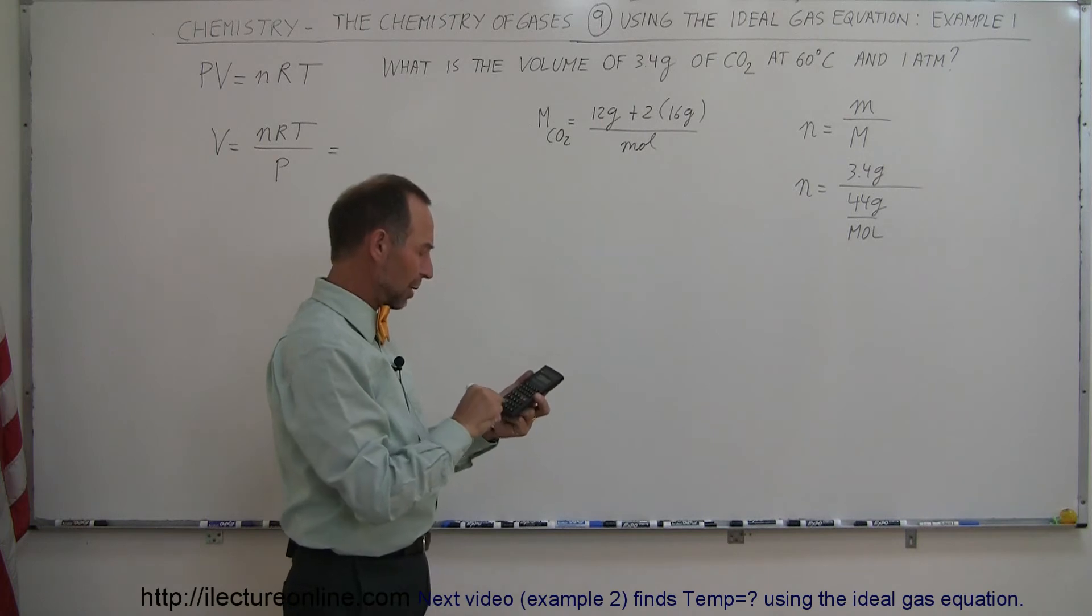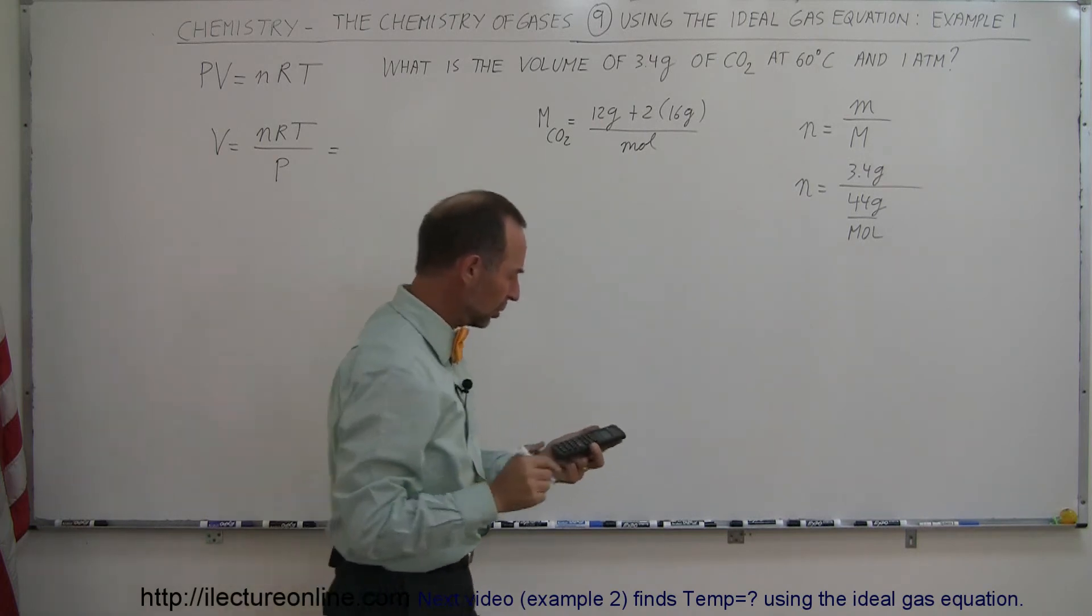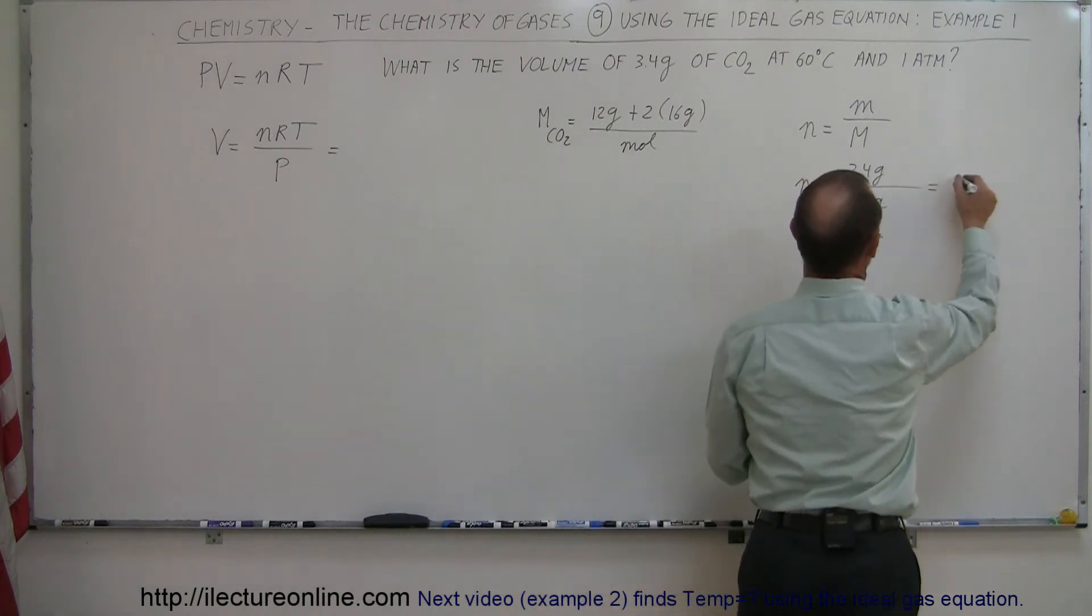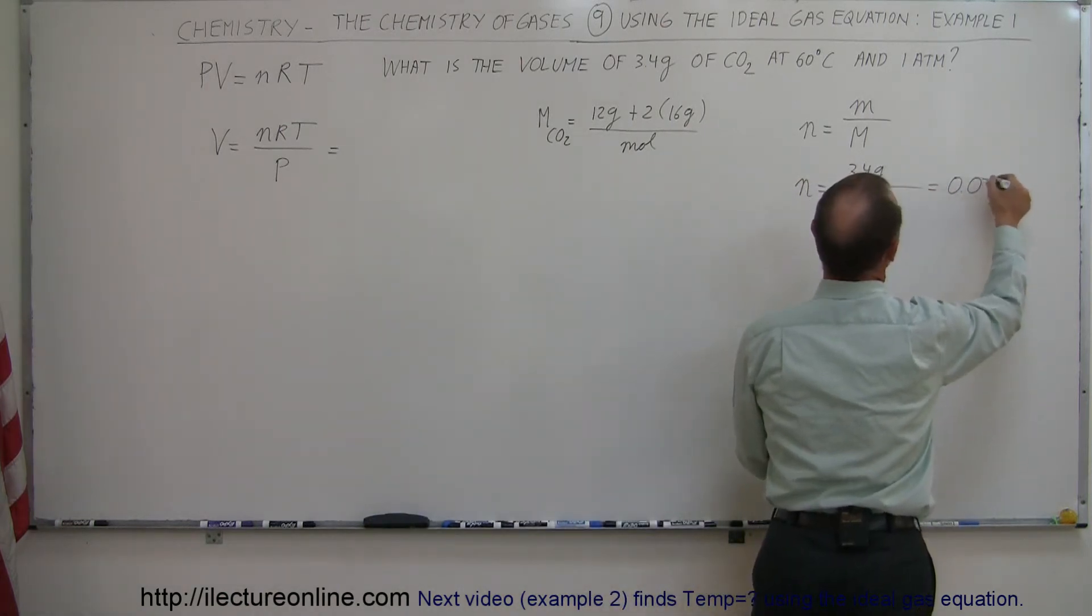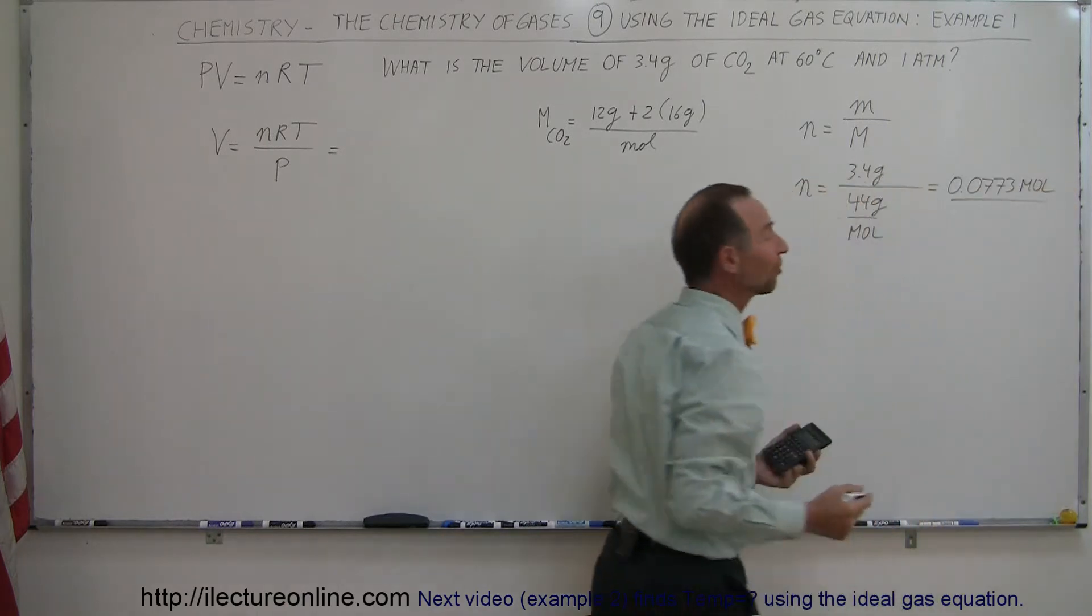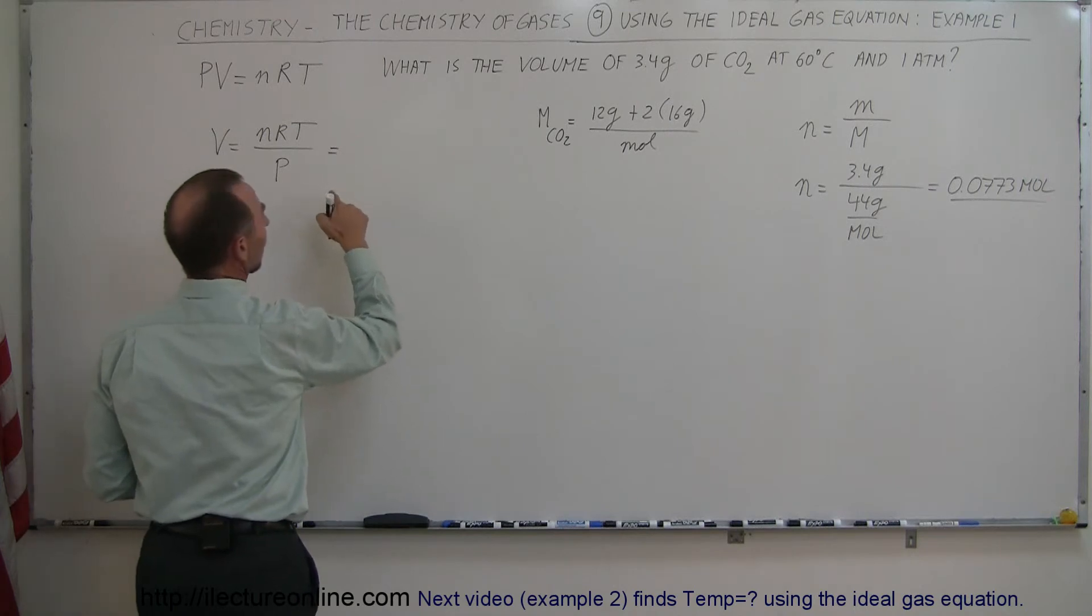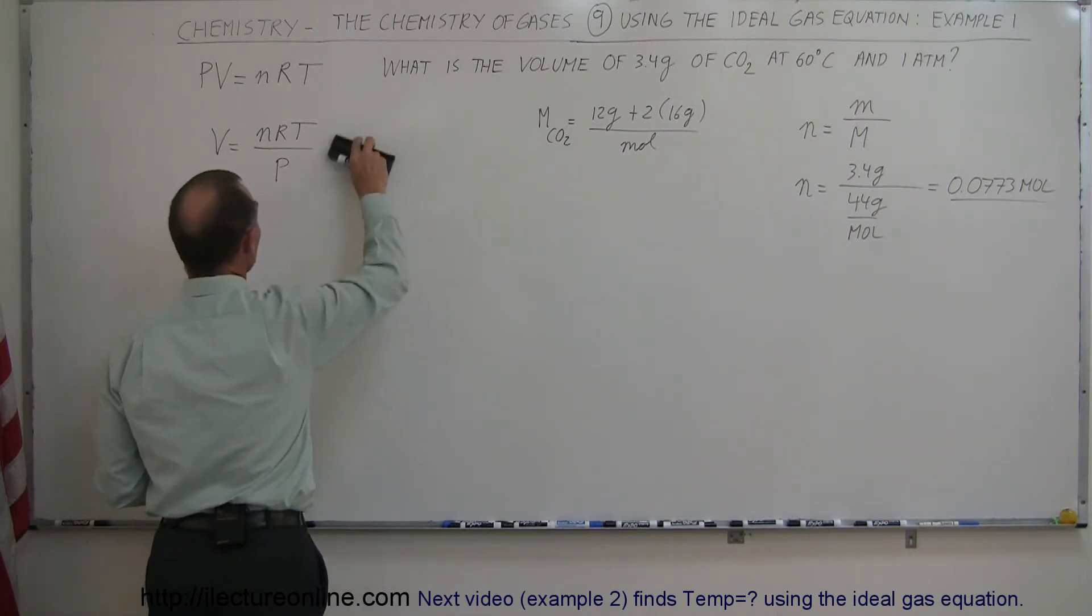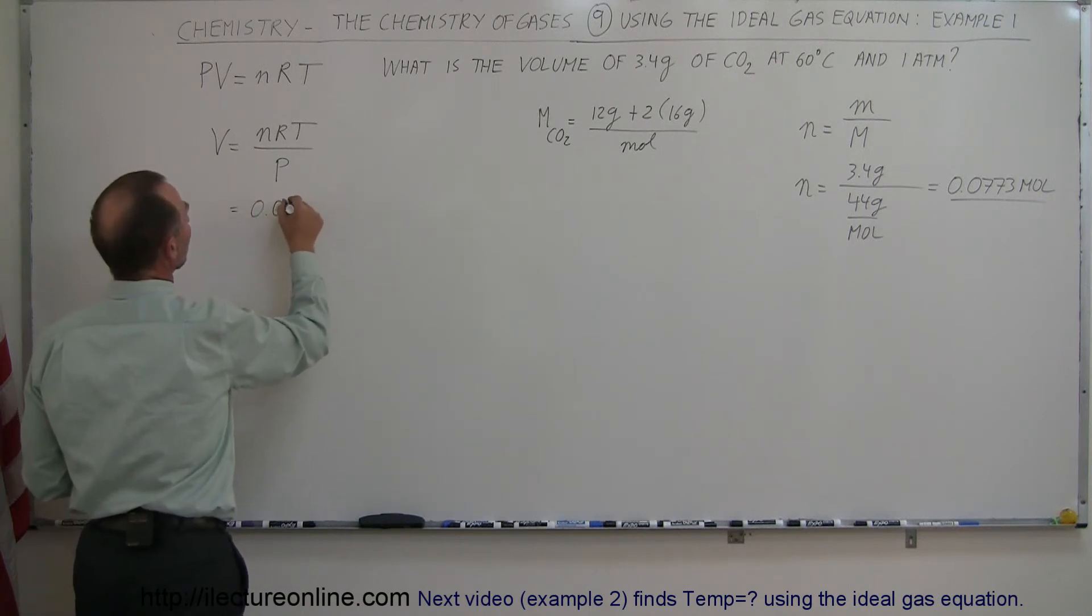So in the calculator, we can say 3.4 divided by 44 is equal to 0.0773 moles. So that's the number of moles we have in our sample, and that's what comes over here. So since I'm running out of room, let me drop down a line, so this is equal to 0.0773 moles.